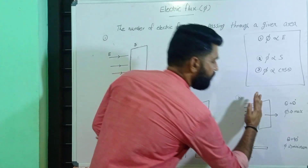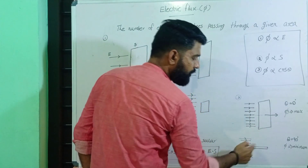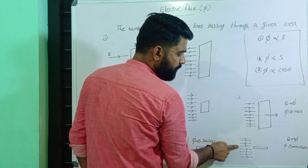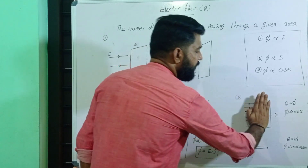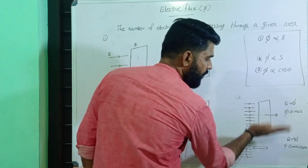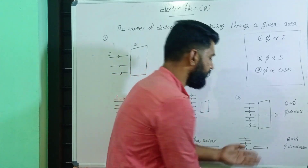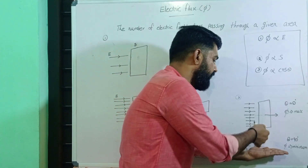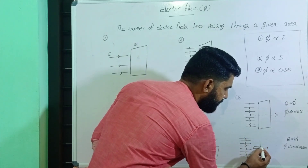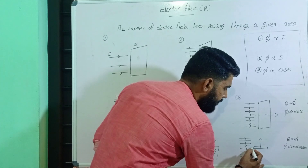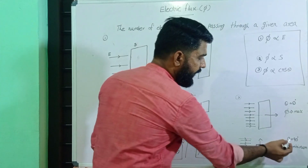If we consider this surface with the same eight numbers of electric field lines, and if we use the area vector in the perpendicular direction — it is the perpendicular direction area vector — then with respect to the field lines, the angle theta is 90 degrees.